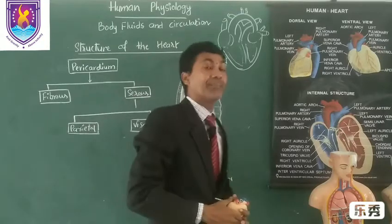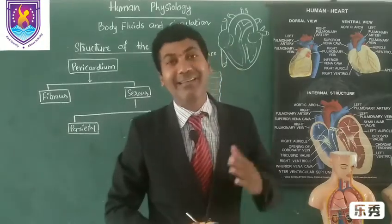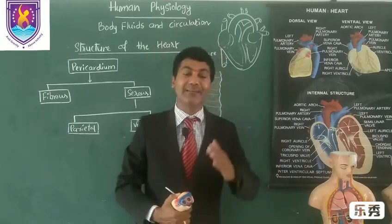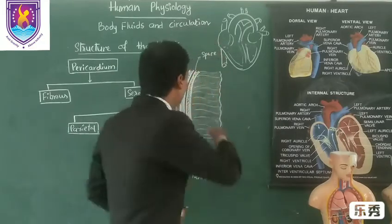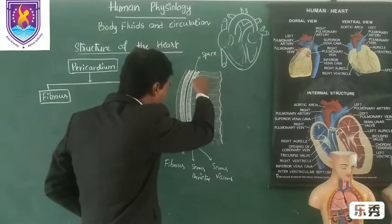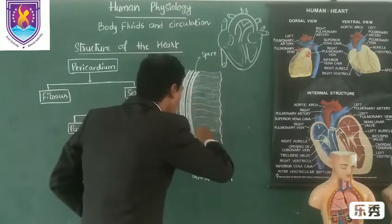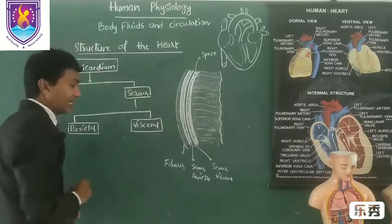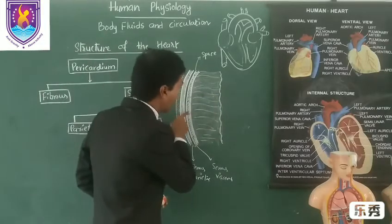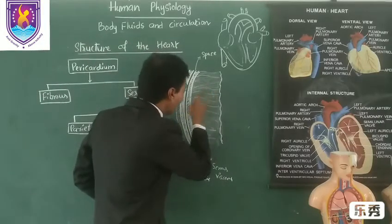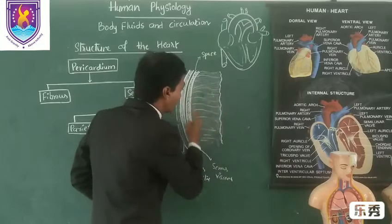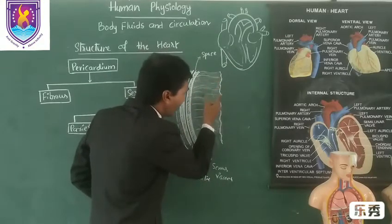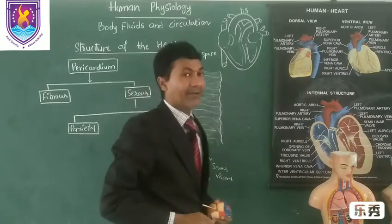Heart is made up of three muscular layers. The outer thin layer is known as epicardium. The middle thick muscle structure is known as myocardium. And the inner wall is known as endocardium.